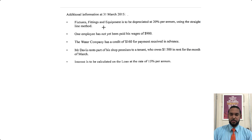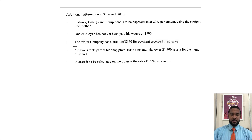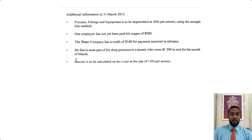The first item talks about depreciation on fixtures, fittings and equipment using the straight-line method. One employee has not yet been paid wages, so that's an accrued expense. The water company has a credit of 160 for payment received in advance — that's a prepaid expense. Mr. Davis rents part of his shop premises to tenants, so that's rent revenue, and he's owed 1500 in rent for the month of March — that's an accrued revenue.